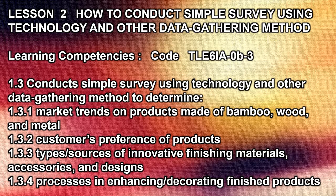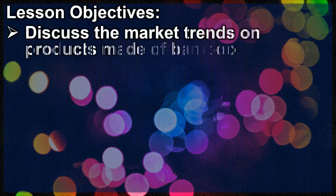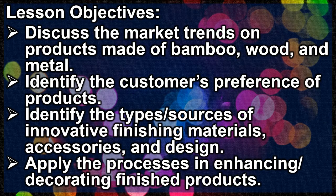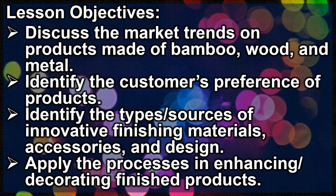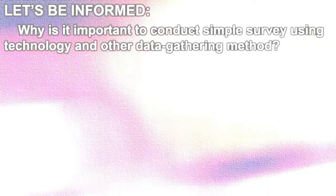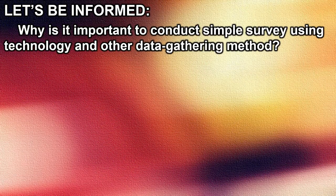Lesson 2: How to Conduct a Simple Survey Using Technology and Other Data Gathering Methods. Learning competencies code: TLE 6 IA 0B3. Lesson objectives: discuss the market trends on products made of bamboo, wood, and metal; identify the customer's preference of products; identify the types or sources of innovative finishing materials, accessories, and design; apply the processes in enhancing or decorating finished products. Let's learn why it is important to conduct a simple survey using technology and other data gathering methods.